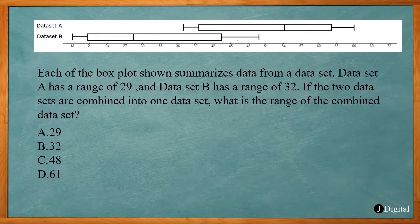So this example ACT math problem says each of the box plots shown summarizes data from a data set. Data set A has a range of 29 and data set B has a range of 32. If the two data sets are combined into one data set, what is the range of the combined data set?